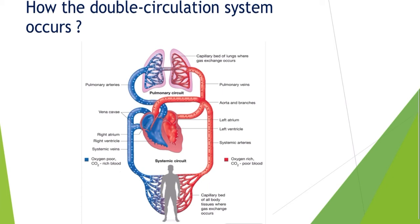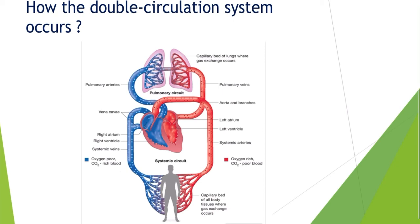Oxygen is consumed by the cells and converted to carbon dioxide. Water molecules, nutrients, and minerals needed by the cells are also used. Instead of oxygen, the capillaries then pass carbon dioxide to the venules, and the venules deliver that carbon dioxide-rich, oxygen-poor blood to the veins.